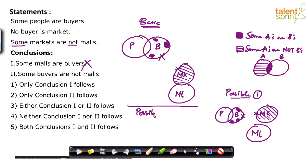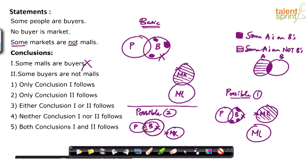Possible diagram two: some people are buyers, no buyer is market — draw them separate. Some markets are not malls. Now, instead of drawing malls outside markets, I overlap malls fully with buyers. Can I draw malls like this? Yes — some markets are not malls is still satisfied, because these markets are not malls. No statement has been violated. But in this possible diagram two, you find that all the buyers are becoming malls.